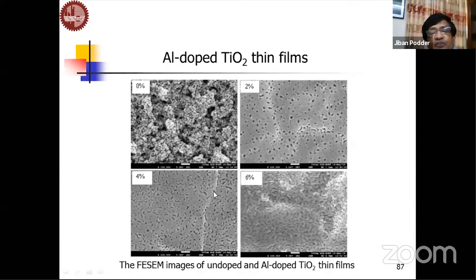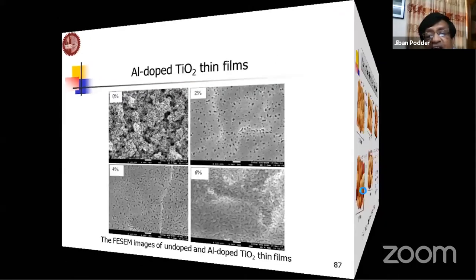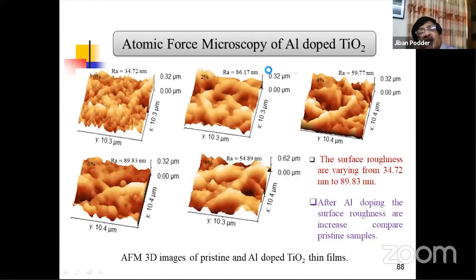Aluminum-doped tin oxide films show very clear porosity with small holes and a sponge-like morphology. These pores can absorb and uptake gas molecules. This formation is possible using low concentrations of aluminum as a dopant, which is a very inexpensive compound. Atomic force microscopy was also conducted on aluminum-doped titanium dioxide films.